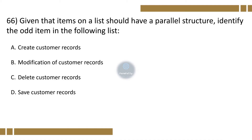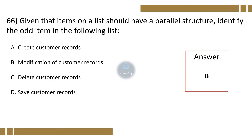Question 66. Given that items on a list should have a parallel structure, identify the odd item in the following list: A. Create customer records, B. Modification of customer records, C. Delete customer records, D. Save customer records. The correct option is B, Modification of customer records.